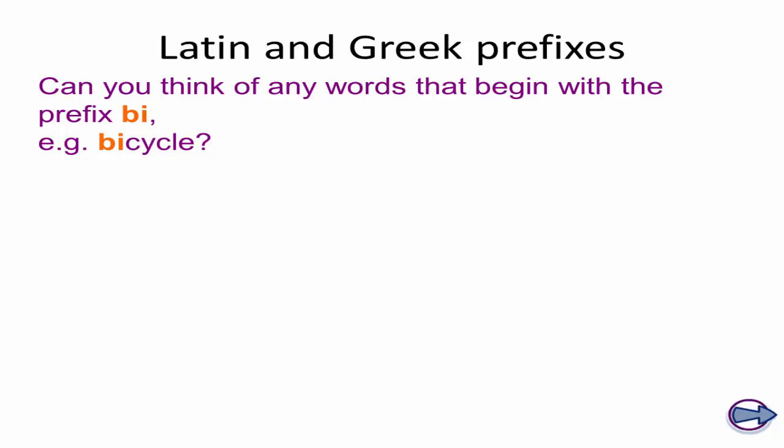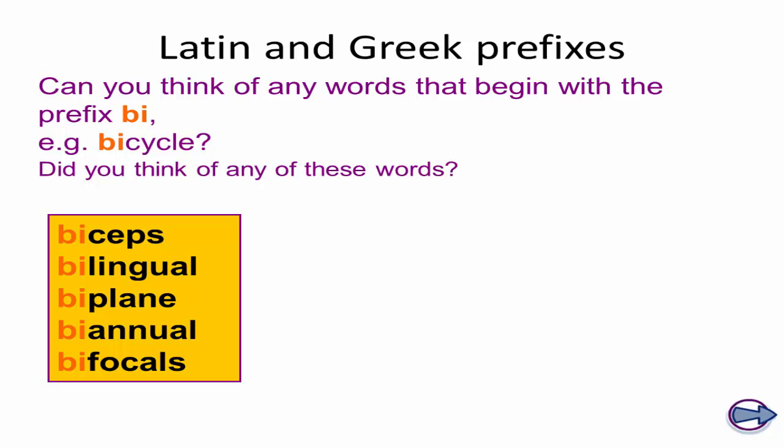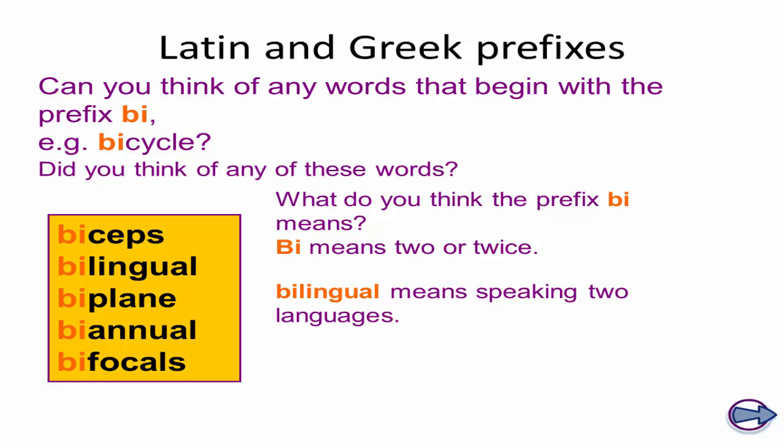Can you think of any words that begin with the prefix bi? For example, bicycle. Excellent, did you think of any of these words? Biceps, bilingual, biplane, biannual, bifocals. What do you think the prefix bi means? It means two or twice. Perfect, so bilingual means speaking two languages, and biannual means twice a year.